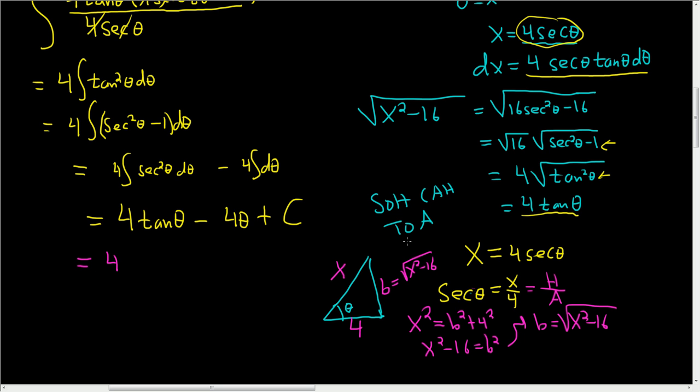SOHCAHTOA, opposite over adjacent. So this is the opposite, the square root of x squared minus 16, over adjacent, which is 4, minus 4 times theta.